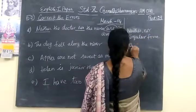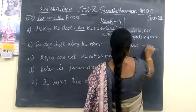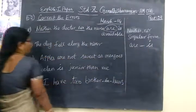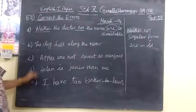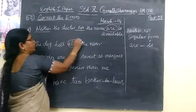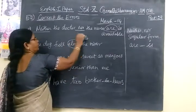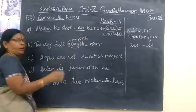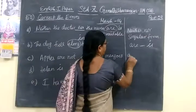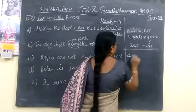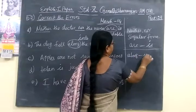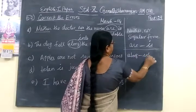'The dog fell along the river.' 'Along the river' is wrong — the correction is 'into the river.' The dog fell into the river. The keyword: instead of 'along,' you are writing 'into.'